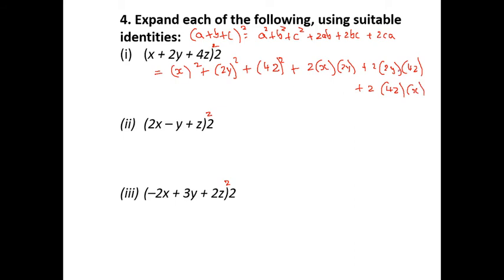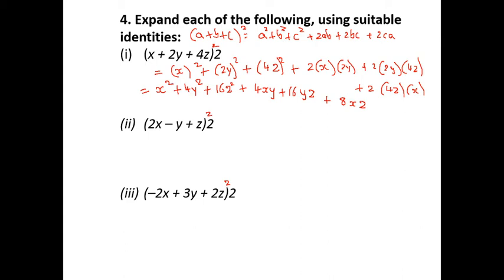Counting the terms: 1, 2, 3, 4, 5, and 6 terms. The full expansion of (x + 2y + 4z)² is: x² + 4y² + 16z² + 4xy + 16yz + 8xz. The same method applies to the next sum as well.